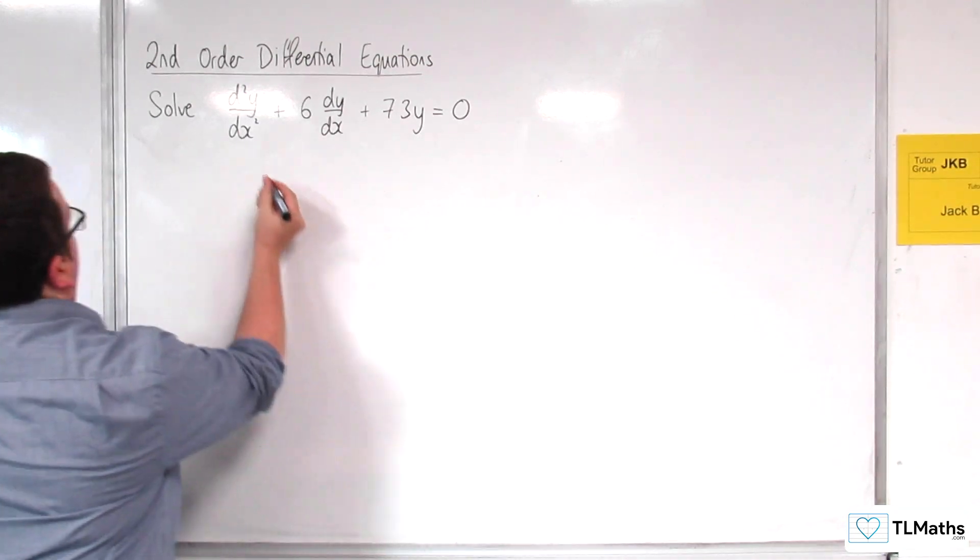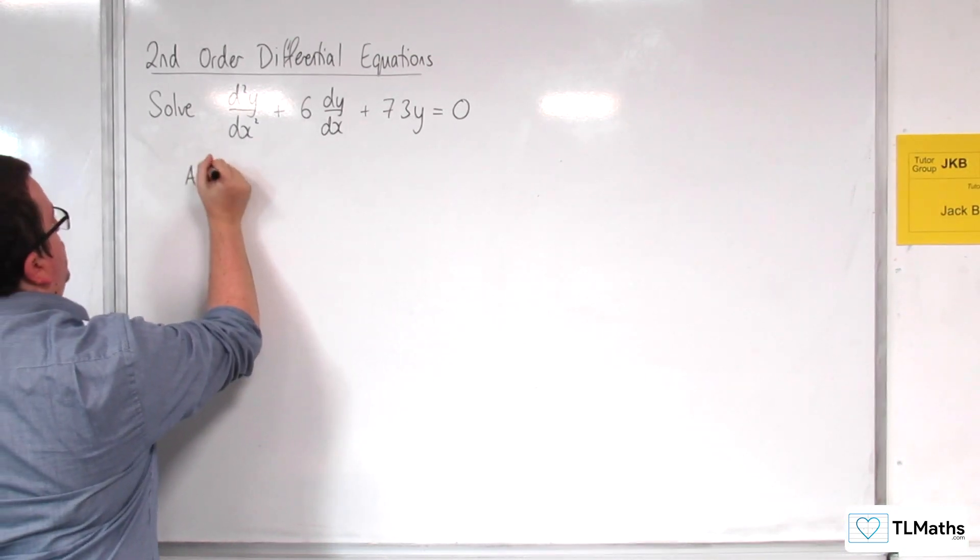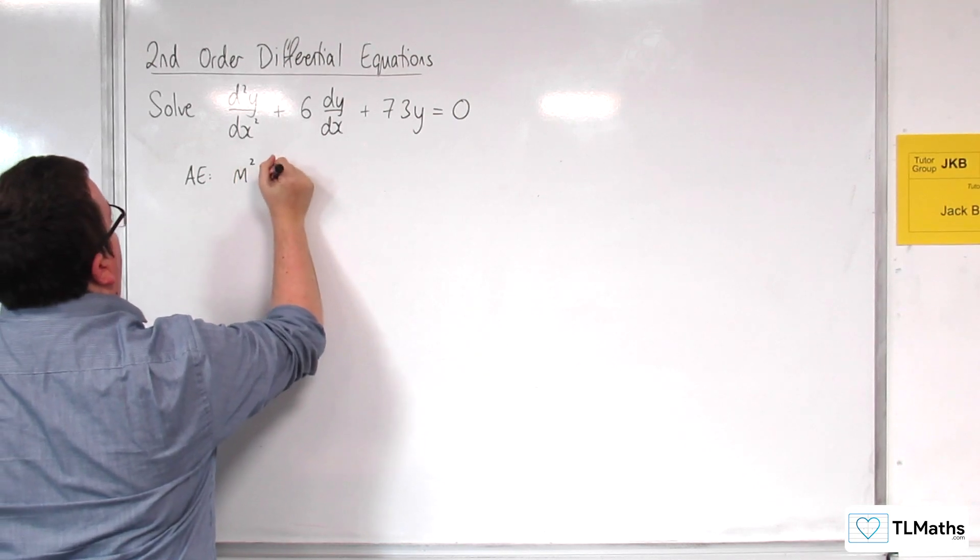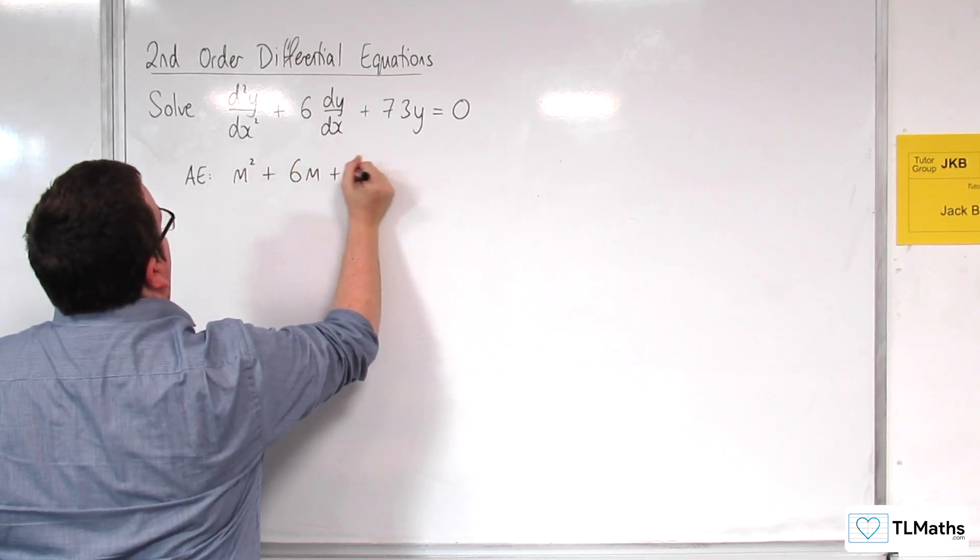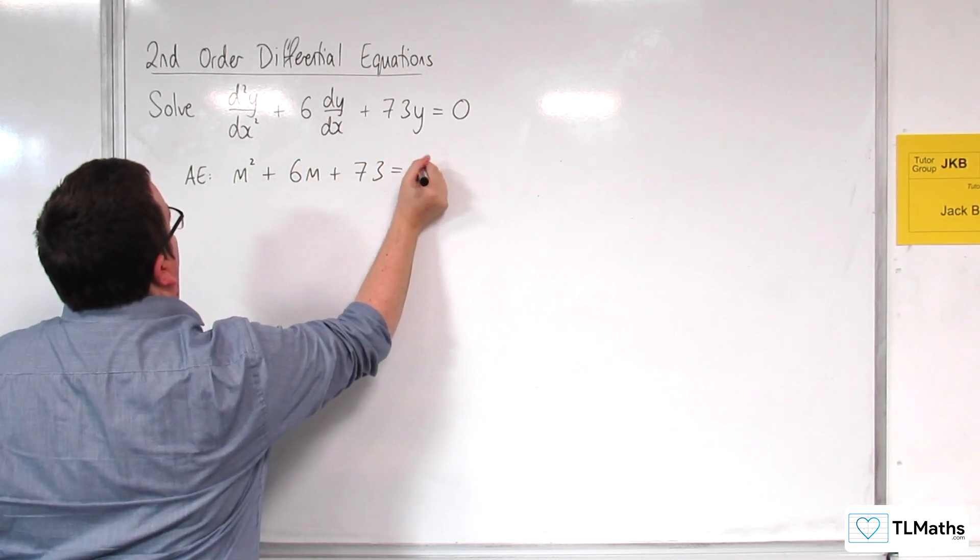So first of all, write down the auxiliary equation, which would be m² + 6m + 73 = 0.